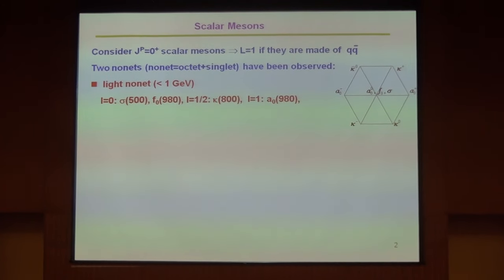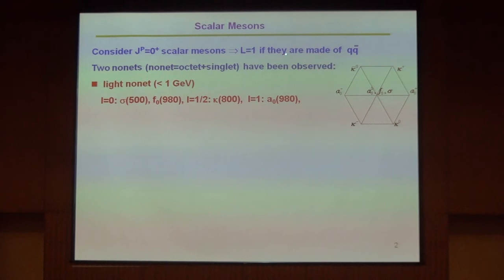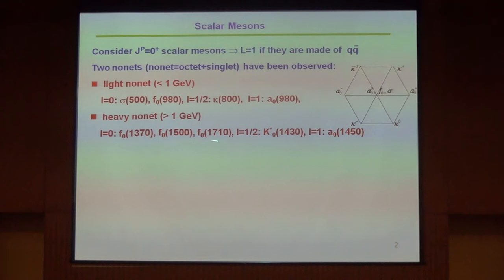A scalar meson is a parity-odd meson, and if it is made of two quarks, then the two quarks must have a relative orbital angular momentum. Apparently two kinds have been observed in nature: light mesons like sigma, kappa, η₀ (a₀), and also f₀, with mass larger than 1 GeV.